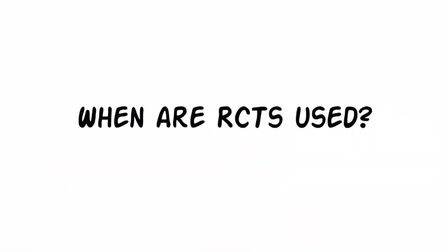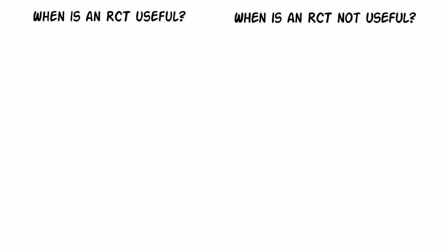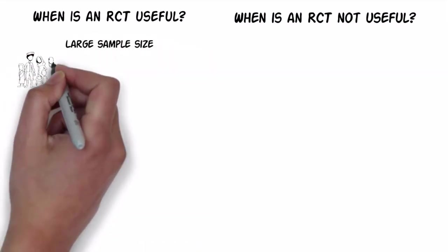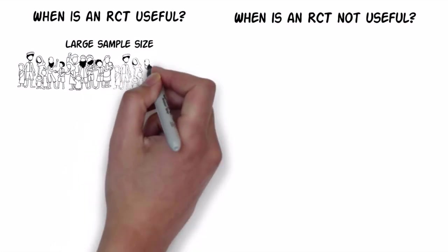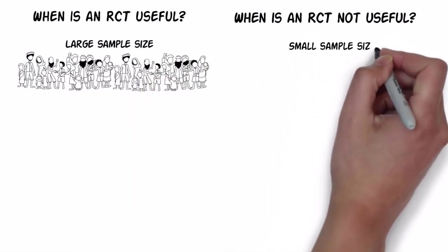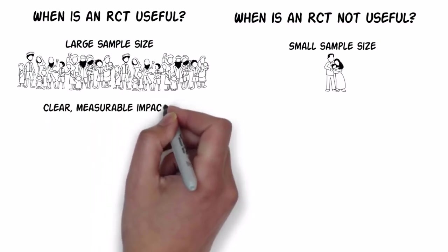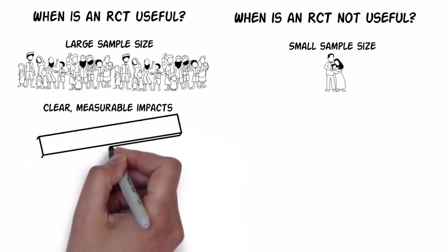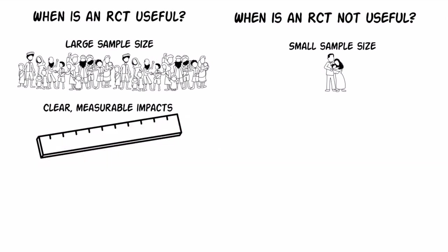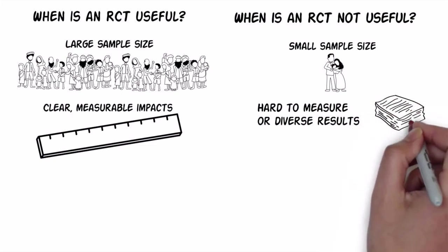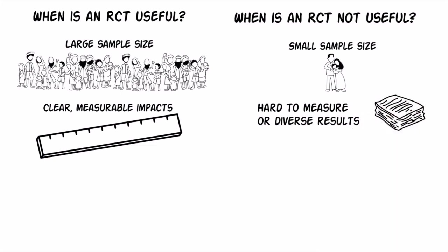Randomised control trials are not always the best method of evaluation. There are times when RCTs are more appropriate, and others when they would not be as effective or may not be possible. For an RCT to be appropriate, there must be a large enough sample size to work with — a small sample size increases the risk of coming to the wrong conclusion. RCTs are applicable when the intended impacts can be readily agreed and measured, such as reductions in stunting or improvements in language development. They are not suitable when the intended impacts are varied, emergent and hard to measure, such as the difficulty of measuring all types of violence against children in a country.